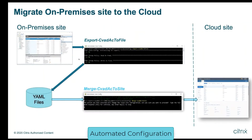This tool is delivered as an MSI. You download the tool on one of your machines, which is domain joined or an on-prem DDC. You run a simple command called export CVDAC to file, and what it does is it discovers the entire on-premise site as a collection of YAML files. Each YAML file represents one node that you see on the left side of Studio — your configuration like catalogs, applications, policies, tags, icons, and so on.